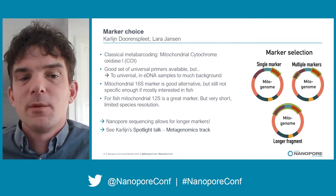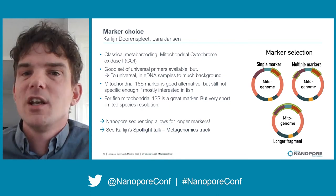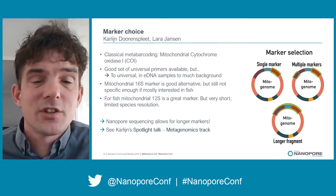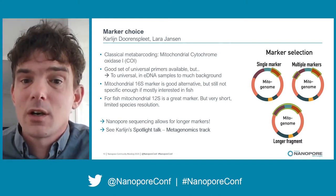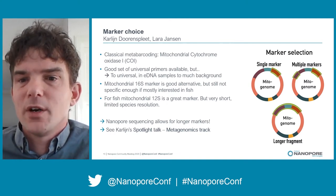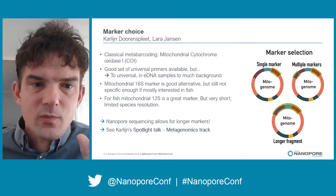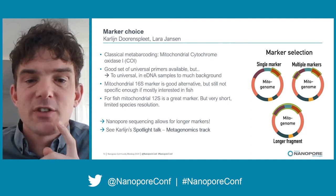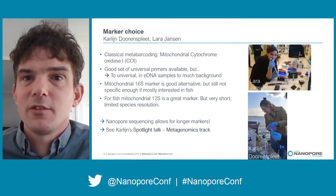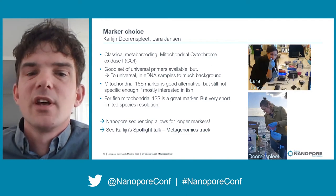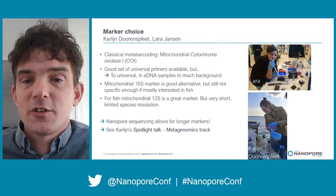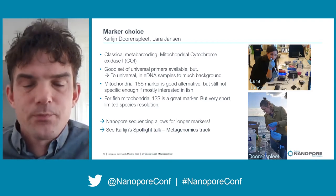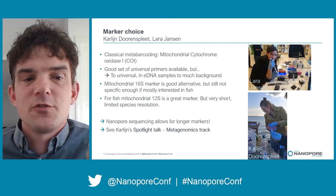Limited species resolution is no longer a problem with Nanopore sequencing, because it allows the use of longer markers — you don't have to use a short fragment of 300 or 600 nucleotides; you can go up to 2,000 or longer PCR fragments. A PhD student in my lab, Carline Doren's Plate, together with Lara Janssen, has developed fish-specific primers with long fragments that allow fish identification down to species level.